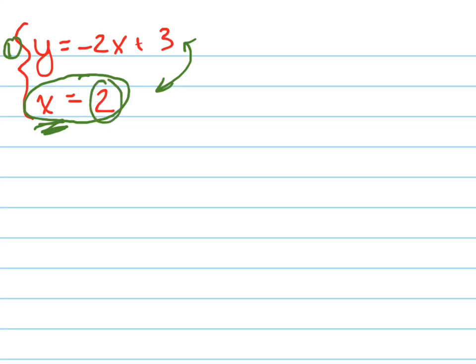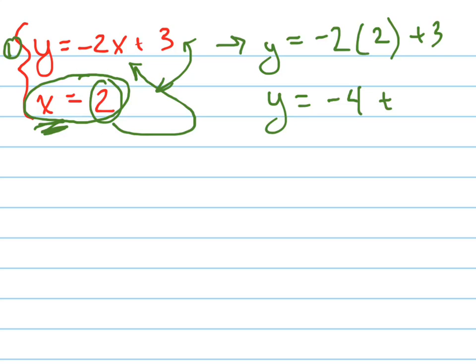So let's do that. y equals negative 2. Now instead of writing x, I'm going to write 2, because that's what x is. I plug that in. Plus 3. Now I don't have two variables, I have one variable. And that variable is y. And y equals negative 4 plus 3, which means y equals negative 1.